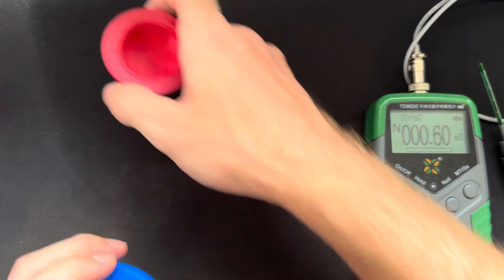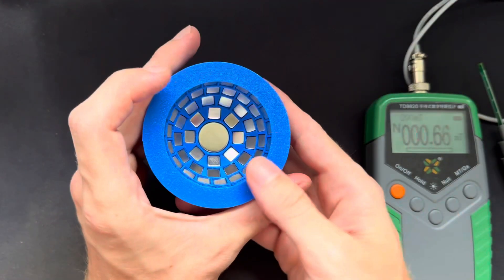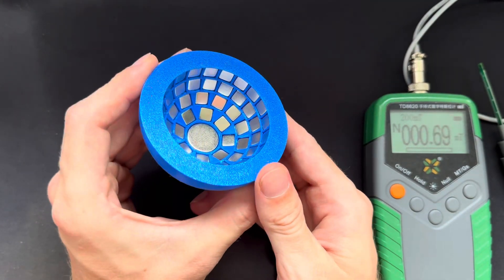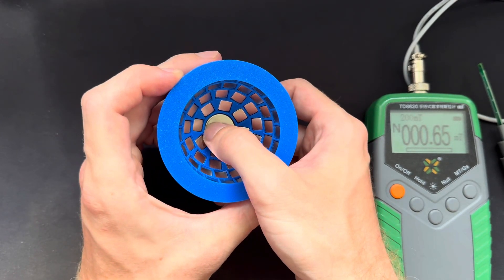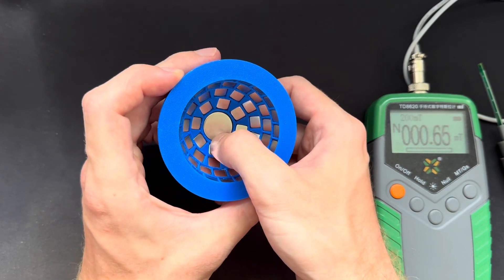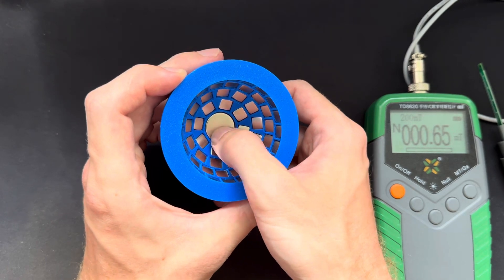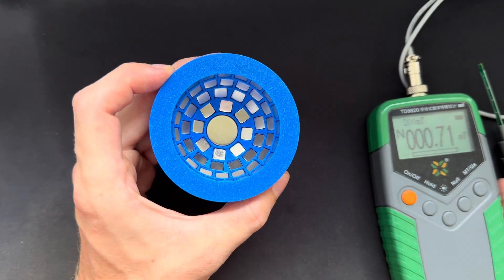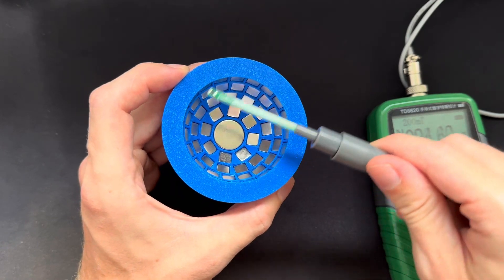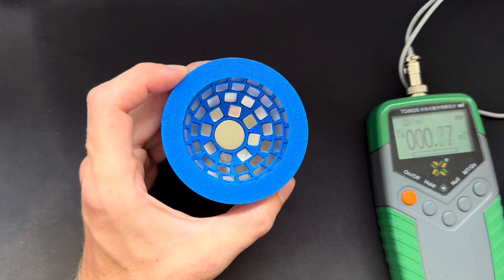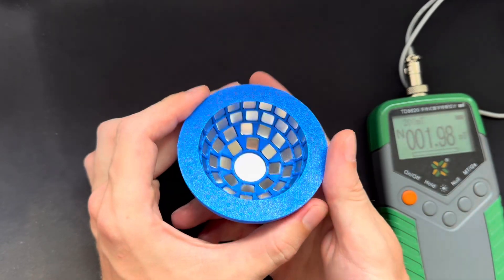And I also made a larger version of it. So this one has 8 millimeter cube magnets 59 pieces of it and in the center I use a 2 centimeter by 1 centimeter disc magnet. And of course this results in a much larger and stronger field and can also be used.